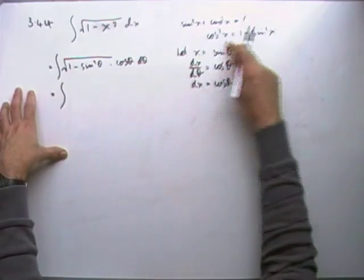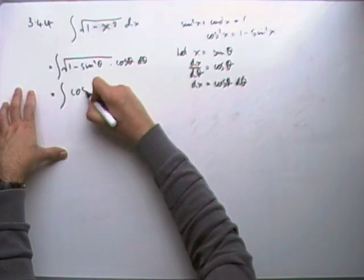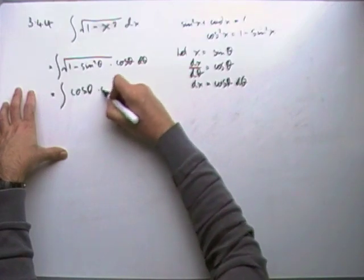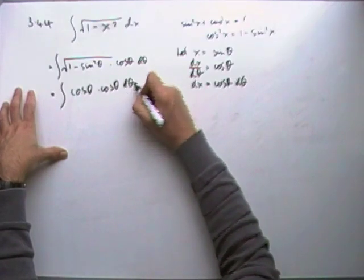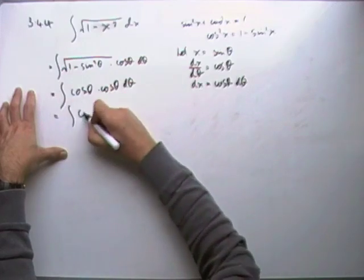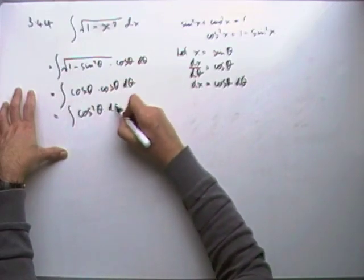Now, 1 - sin²θ is cos²θ. Square root of cos²θ is cos, so that's cos θ times cos θ dθ. I know, I could have done that in one go as well. So cos²θ dθ.